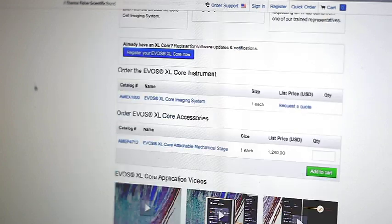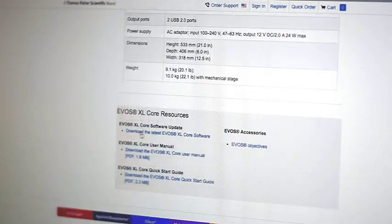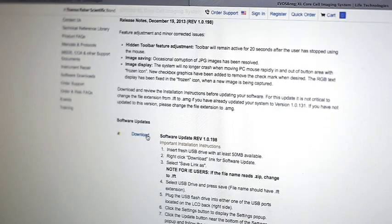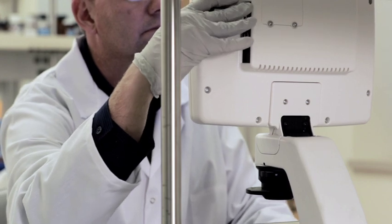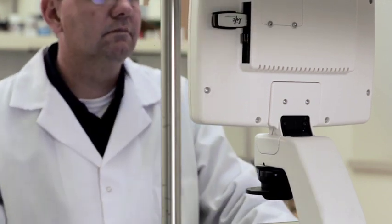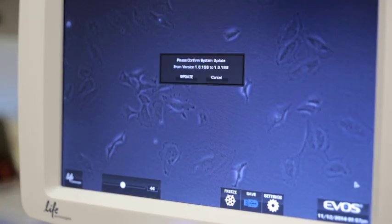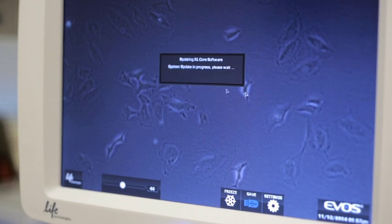If a software update is ever required, we provide free downloads of the software upgrade on the support section of our website. Simply download the required software to a flash drive and insert into one of the two USB ports on the instrument and select the software update button located in the settings menu.